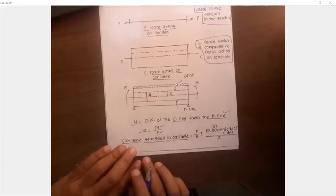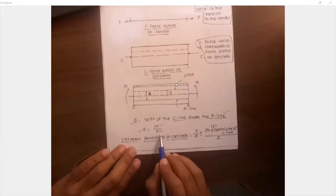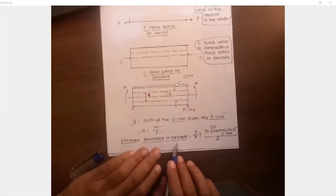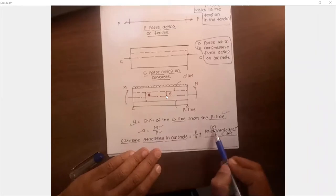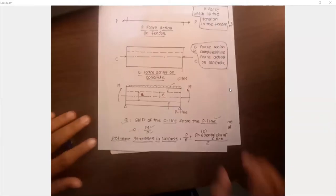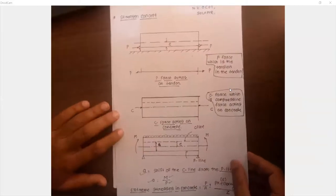You calculate the shift 'a' using the formula a = M/P, where M is the bending moment on the beam and P is the prestressing force. Knowing these, you get the shift. Extreme stresses in the concrete are then calculated using direct stress plus bending stress due to the eccentricity e, which is the eccentricity of the C line from the central axis. We will now see one more problem solved using the strength concept.